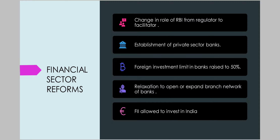Now, coming to financial sector reforms. We all know that RBI is the apex financial institution governing the financial sector of Indian economy. There was a change in the role of RBI from regulator to that of a facilitator. Private sector banks were also established in Indian economy after the liberalization reforms of 1991.